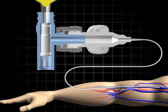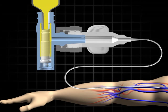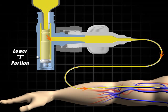When the CLC2000 is accessed, fluid from the flush syringe or infusion device fills the cylindrical chamber in the lower T portion of the CLC2000 connector.